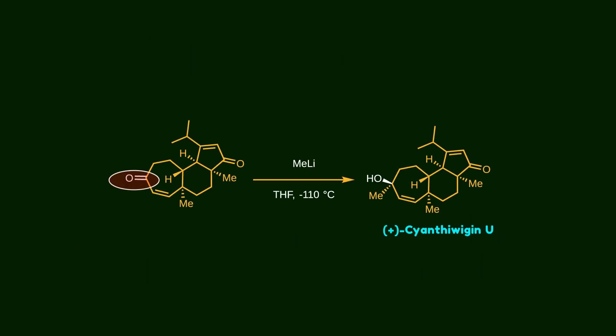Finally, this ketone is attacked by methyl lithium, leading to installation of a methyl group. Due to the folded structure we discussed earlier, this addition proceeds diastereoselectively. Again, based on the hard-hard soft-soft principle, the kinetic 1,2 product is the favored pathway.